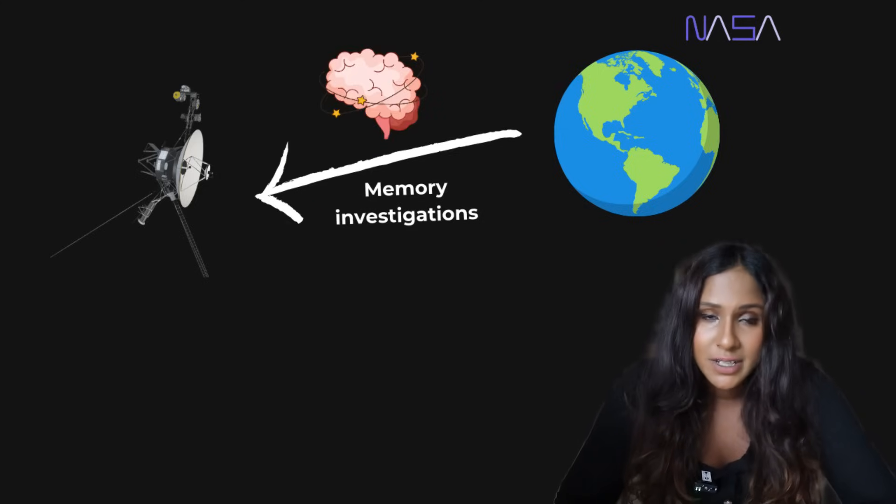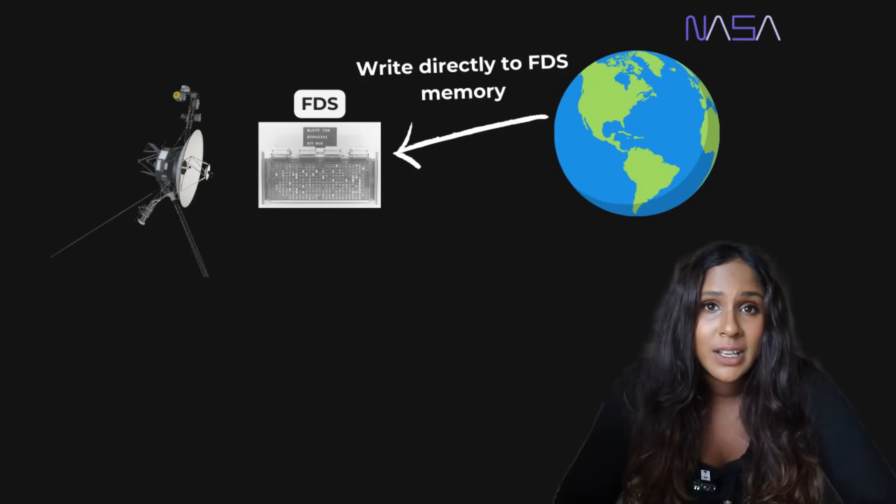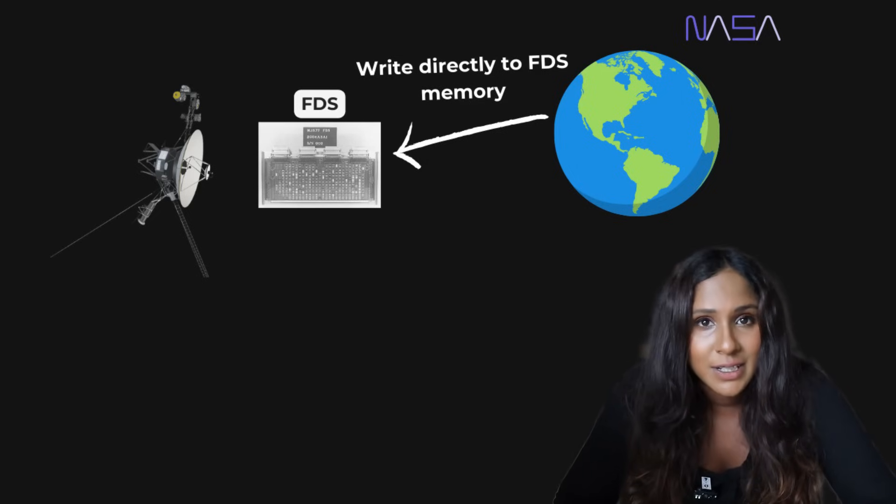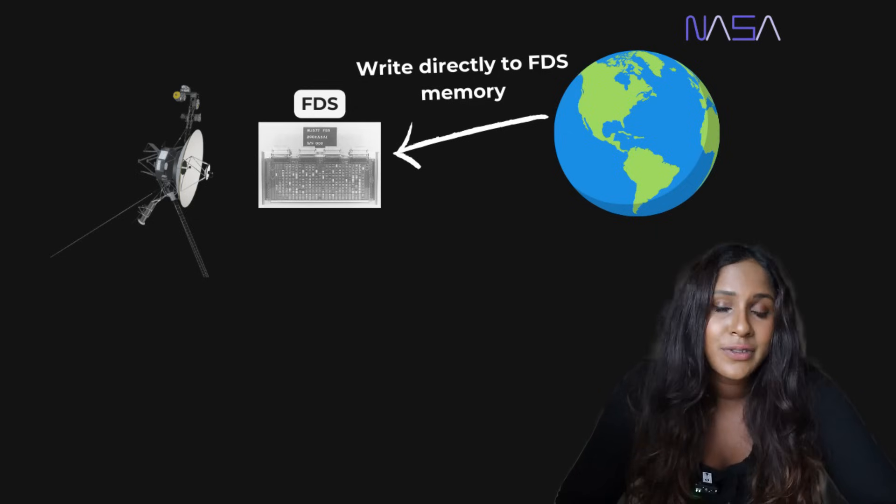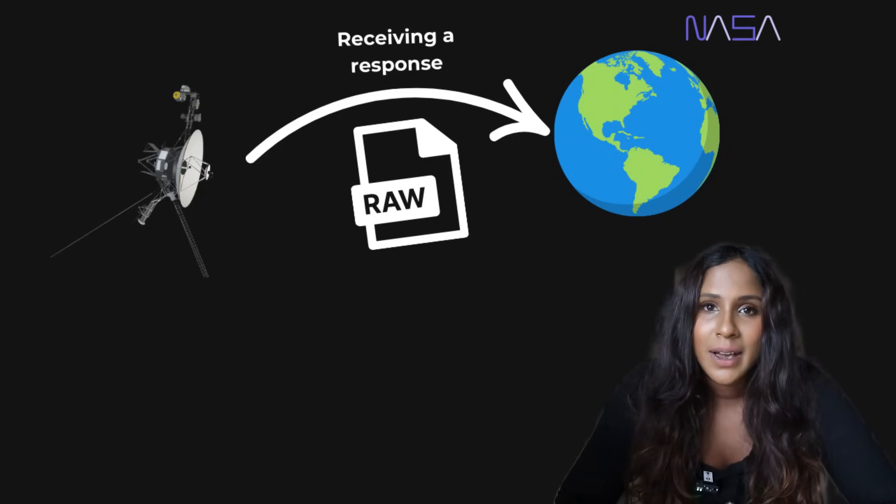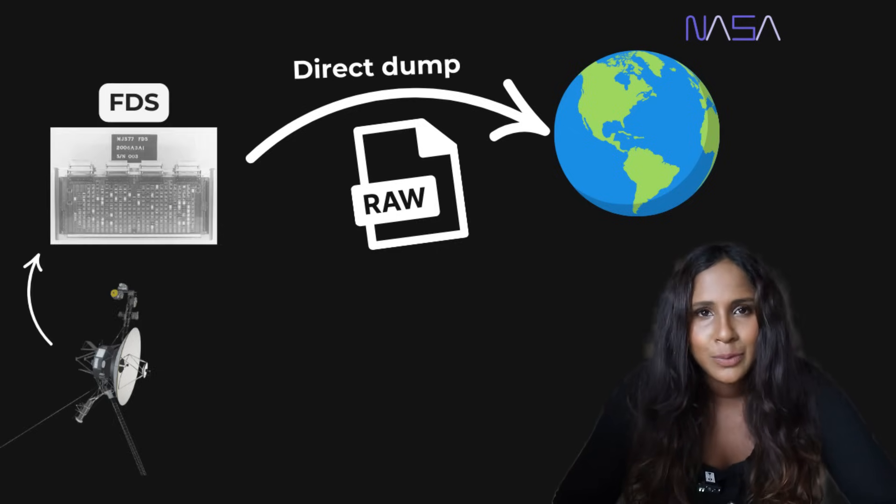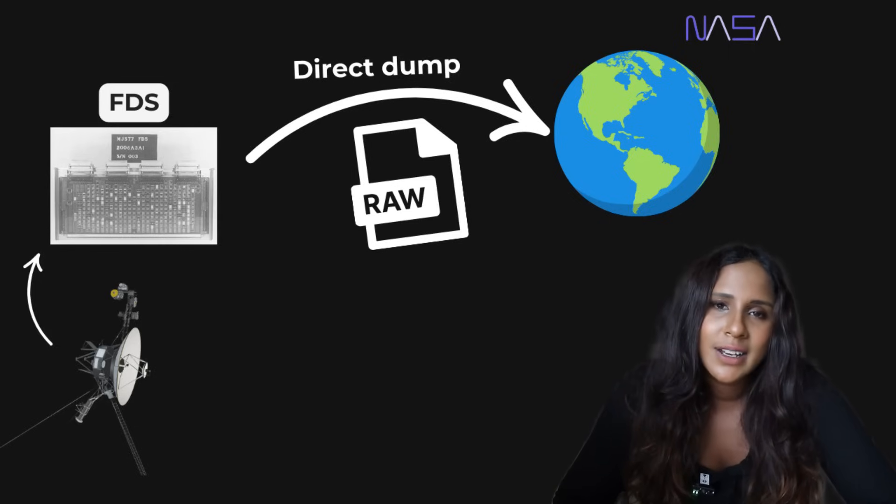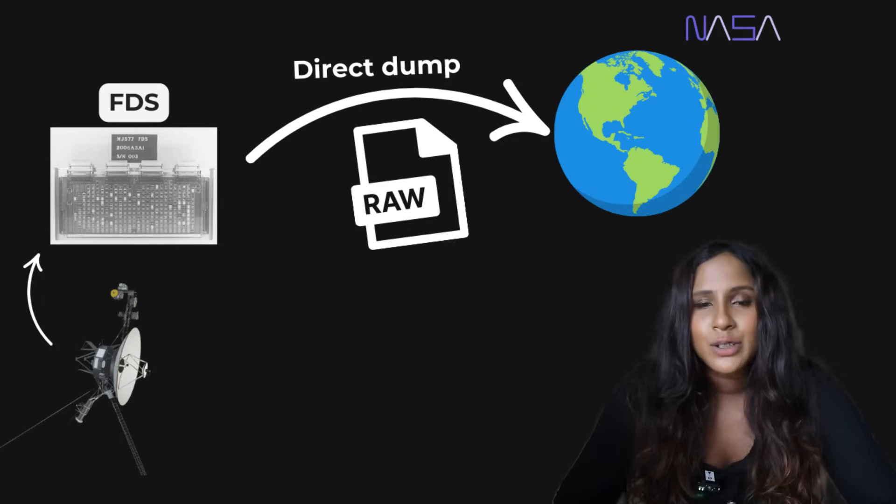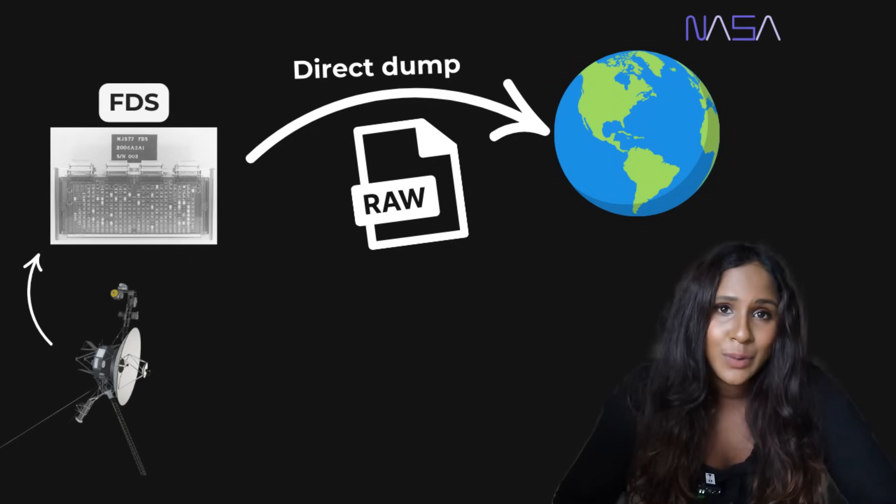And then lastly, they did some memory investigations. So they did suspect that the problem was with the FDS memory. So they decided to dig a bit deeper there. So they tried to send commands to write directly into the flight data subsystem's memory, aiming to try and change how it was sending the data. Because after several tries and different commands, something changed. Because Voyager 1 now started sending back a stream of raw data that made sense. At first, it didn't make sense. But with some clever decoding, the engineers actually realized that this data was a direct dump of the flight data subsystem's memory.